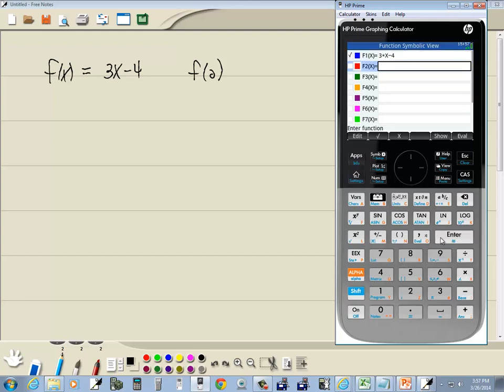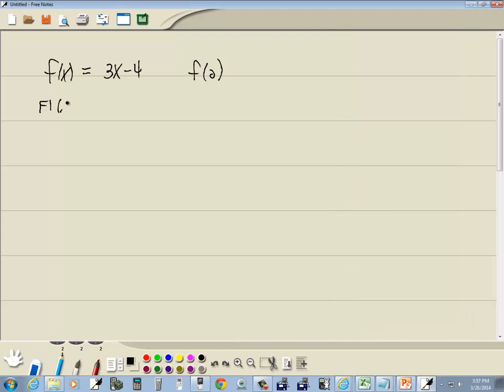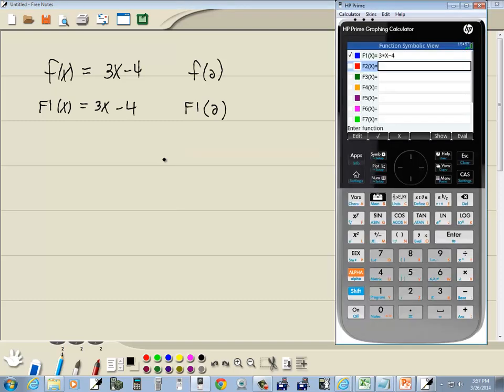Now what we're really looking at is f1(x) = 3x - 4, so we're going to find, instead of f(2), we'll find f1(2). Just different notation for our function.